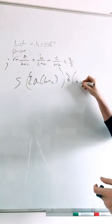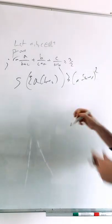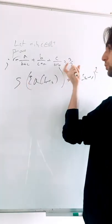What do we get on this side? We get A plus B plus C squared. Now what do we need to prove? Well, we need to prove S is greater than or equal to this.